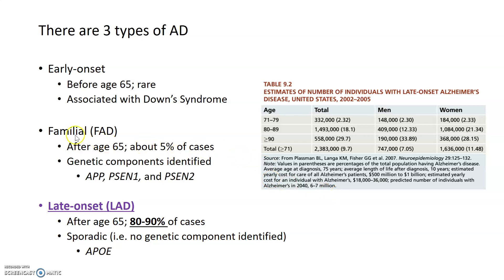Familial AD, this really genetic form of Alzheimer's disease, only accounts for about 5% of all Alzheimer's cases. 80 to 90% of cases of diagnosed Alzheimer's are late onset, or LAD, Alzheimer's disease. These also occur after the age of 65, but they're what's known as sporadic or random, meaning that there has been no genetic component, no mutation that has been identified in patients who have late onset Alzheimer's disease.